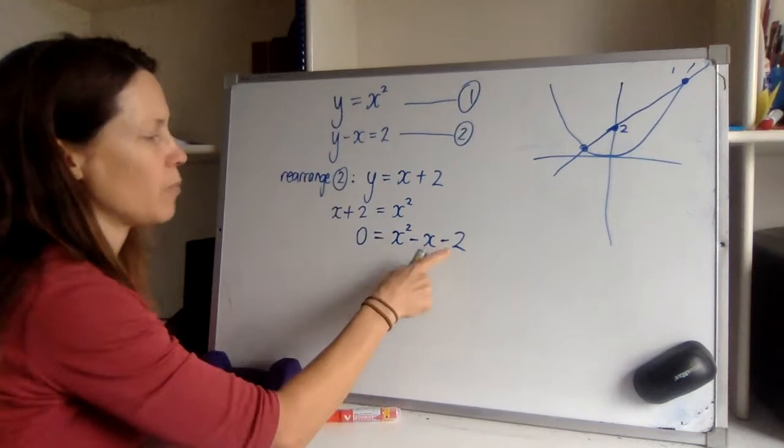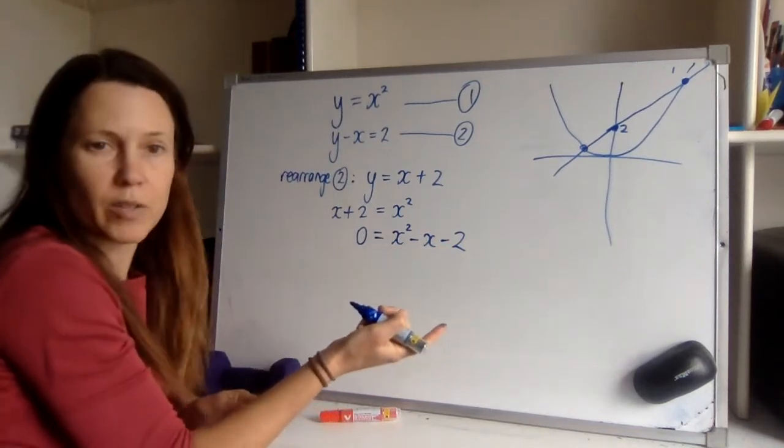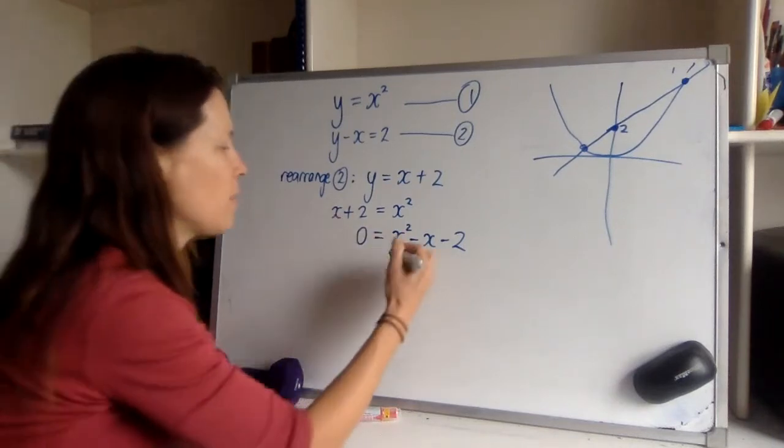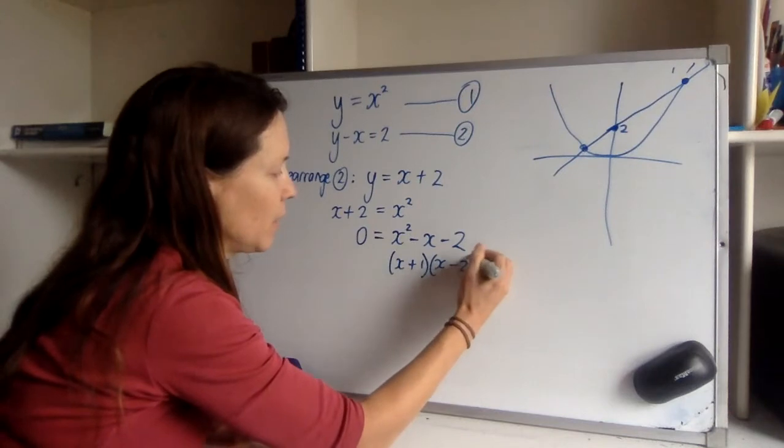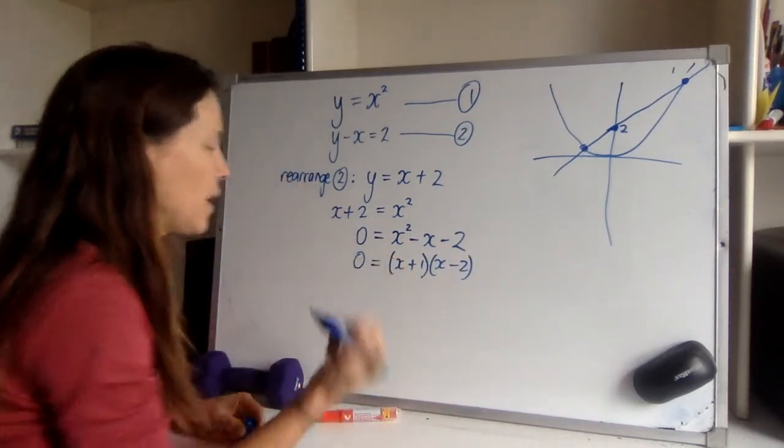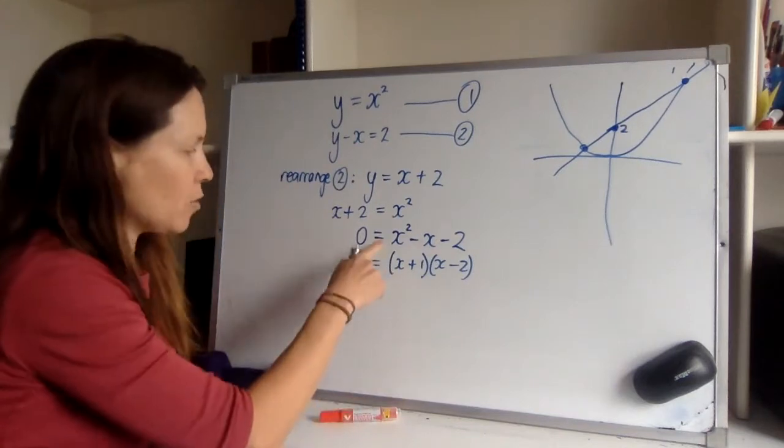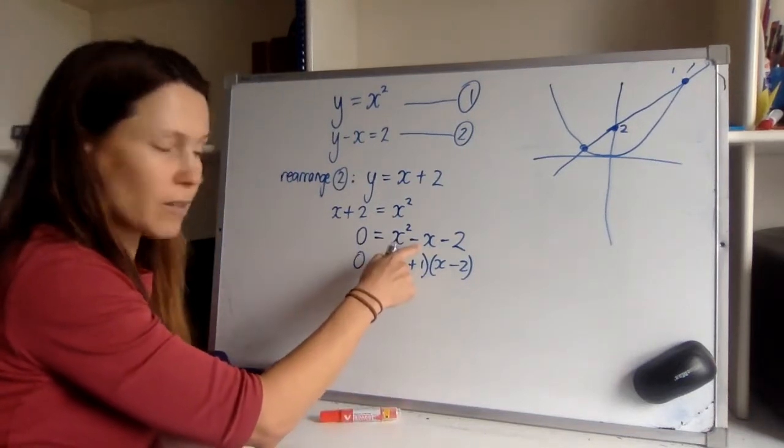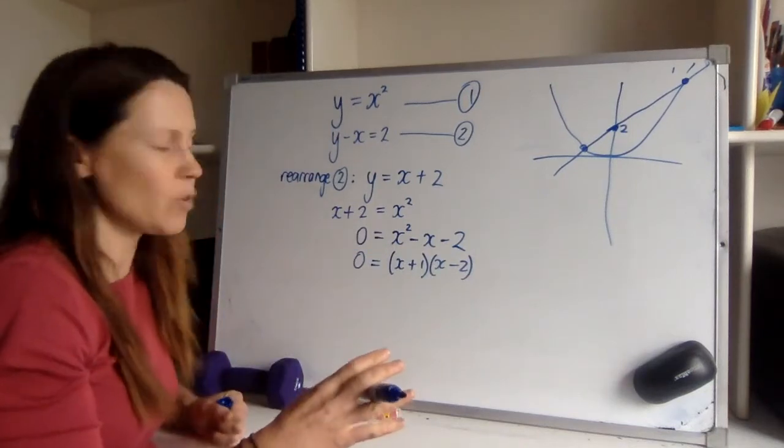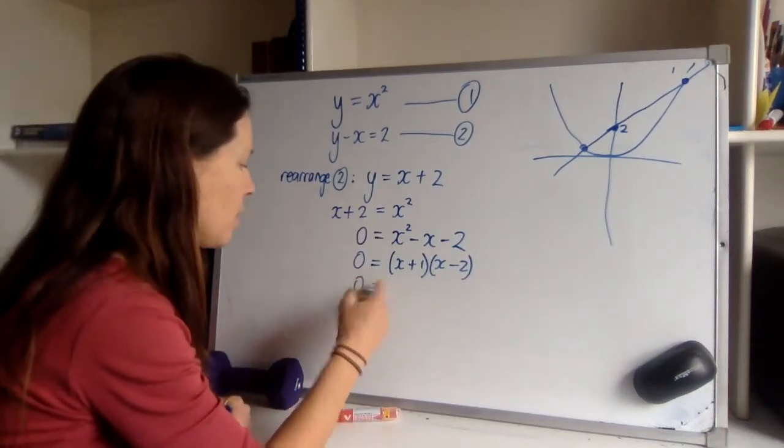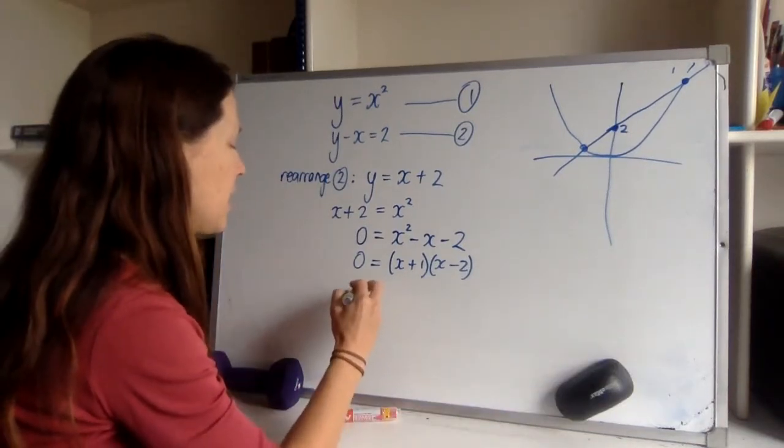Now solving this, can we think of factors of negative two that add to make minus one? Yep, one and minus two. So this one can be factorized. And if it can, factorizing is generally your quickest bet. If you're not good at factorizing, you could throw the formula at this and using one for a, negative one for b, and negative two for c, throw it into the quadratic formula and you'll get out the answers.